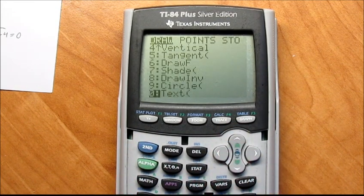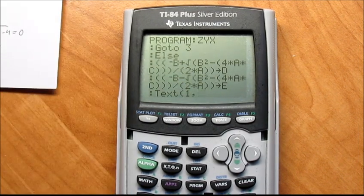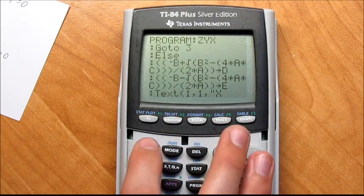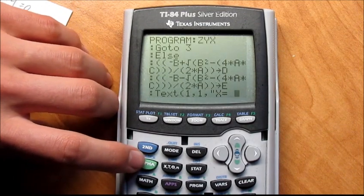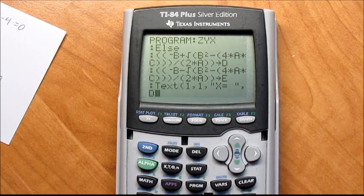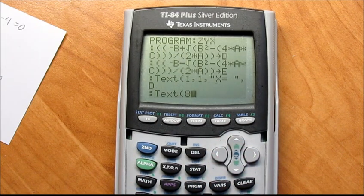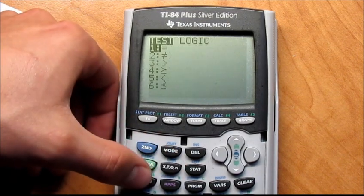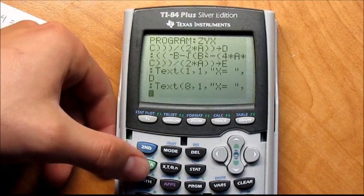Then second program up and then you'll come to text, and then you're going to go, and you want 1, comma 1, comma, alpha plus X, second math equals, alpha zero, alpha plus comma D. And then do the same thing except this time you're going to go 8, comma 1, comma, alpha plus X equals space, quotations, comma E. All right.